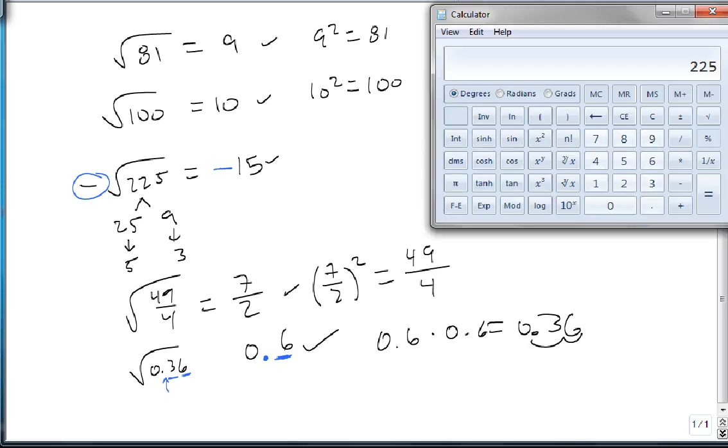Now, back to the calculator. You'll notice on the built-in calculator, this y to the x button, if we were to hit this and then hit 2 for the square root and equals, we'd get 15. So you can use this button on your calculator to get the square root.